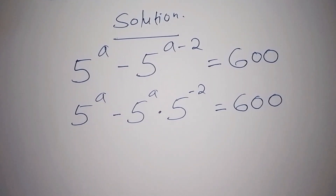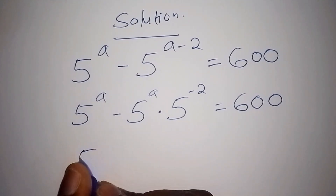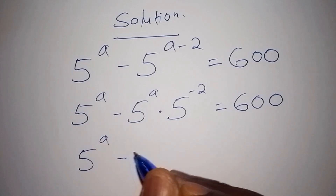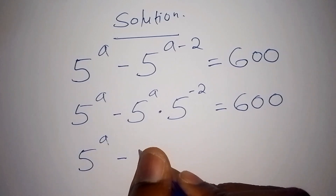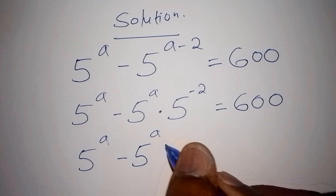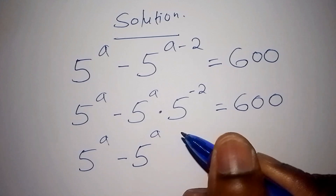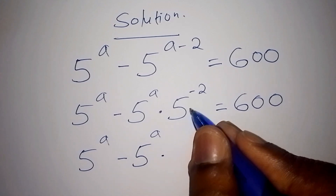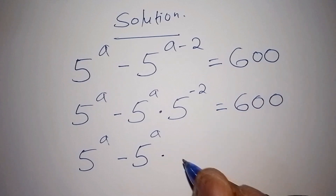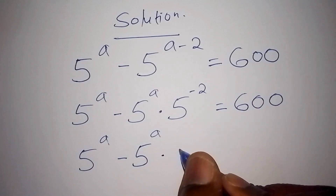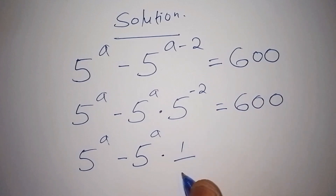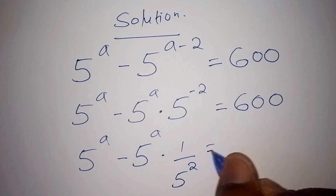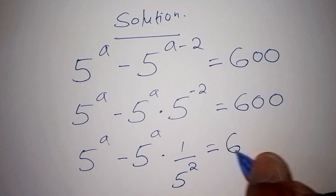The second step: we can say that here we have 5 to the power of a, then minus 5 to the power of a, multiplied by 5 to the power of minus 2. We can change 5 to the power of minus 2 as 1 over 5 to the power of 2 — now positive — and that equals 600.